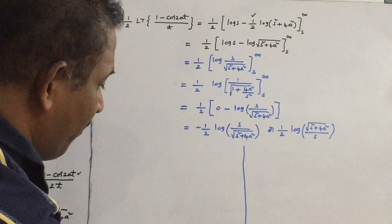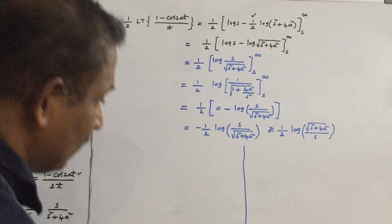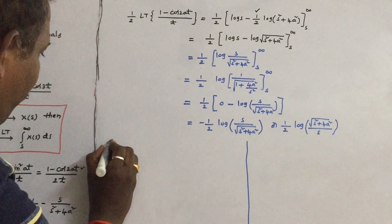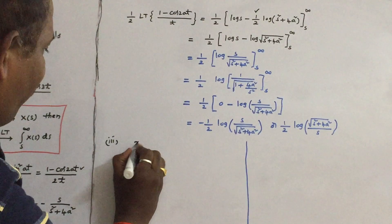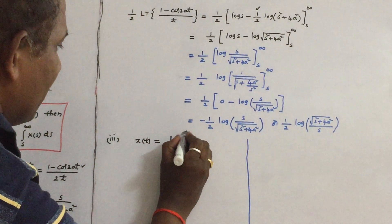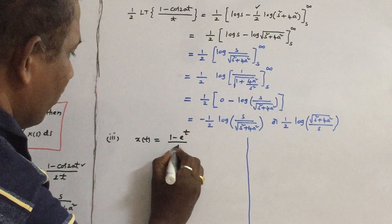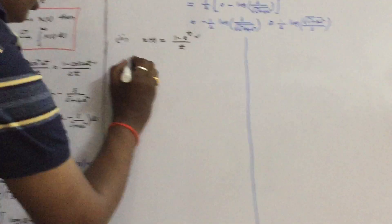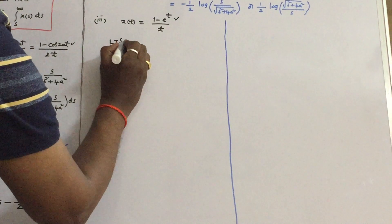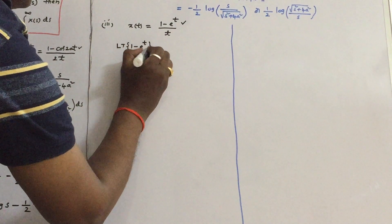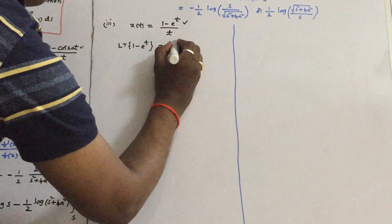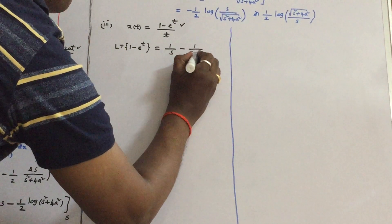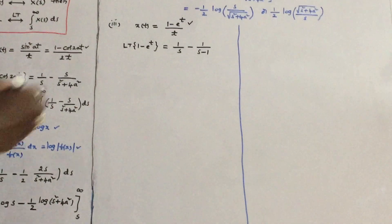Let us see the next example, number 3. X(T) is equal to (1 minus e^T) by T. We want to find the Laplace transform of the numerator first. The Laplace transform of 1 is 1/S, and the Laplace transform of e^T is 1/(S minus 1).